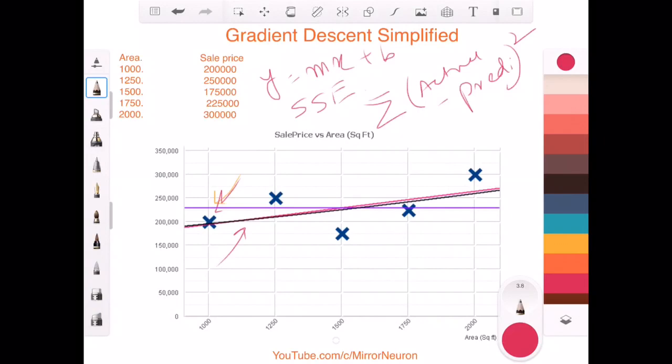The first thing that we do is start with a random guess. Then with the result that I see, I first reduce both m and b and see whether the SSE has reduced or not. If it has reduced, then I will keep decreasing both m and b and continue until I reach the minimum value of that squared error.